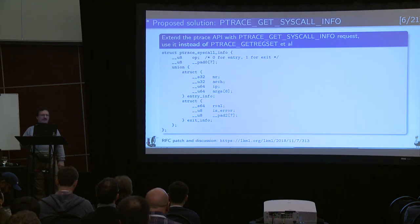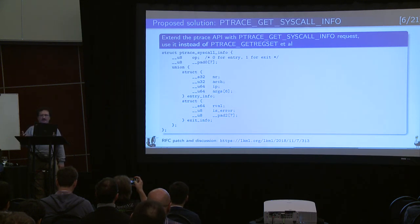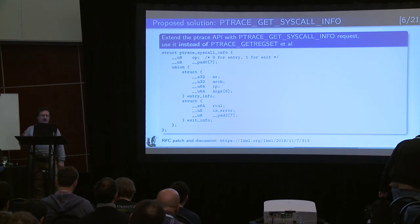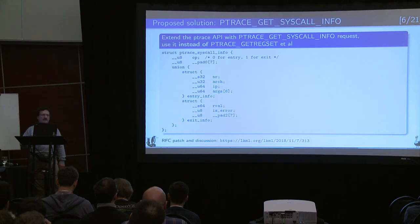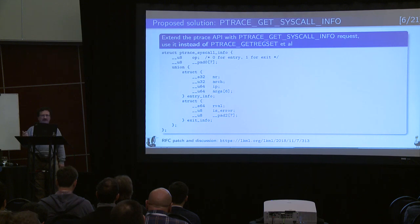What we suggest is to extend the ptrace API with a command that can tell the difference. But if we are adding something to this interface, we can do better than just return the architecture and whether it's entering or exiting. We can, at the same time, return all the information that strace usually tries to obtain in this case. So if we introduce a command that returns all this information we usually need - which we usually obtain by issuing PTRACE_GETREGSET - then you won't have to issue two ptrace commands instead of one. We'll keep the same number of syscall invocations and get reliable information right from the kernel.